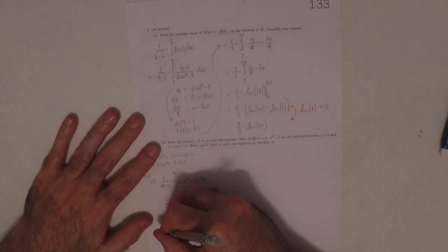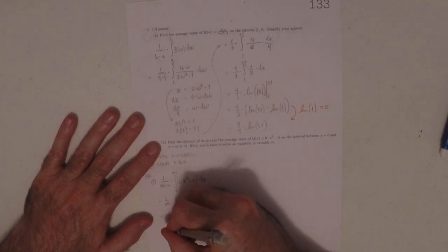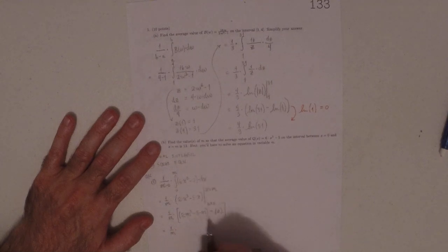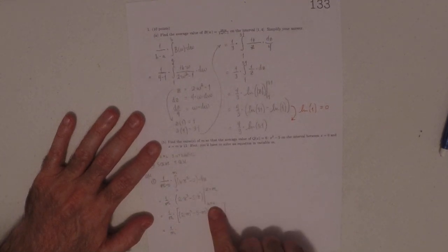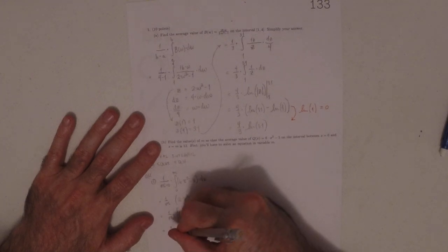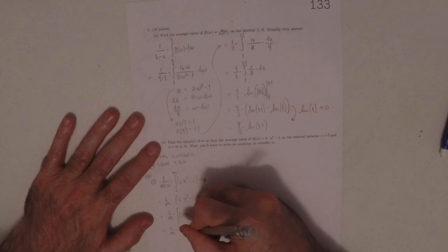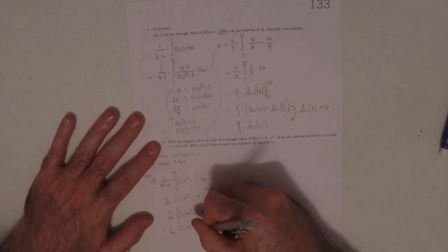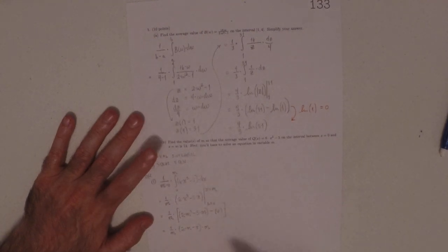Because when you plug in x equals 0, all that stuff is 0. So this would be 1 over m multiplied by... now notice that there's... in the first place, that 0 is out of the picture, and then all those terms have a common factor of m. So this looks like 1 over m and then multiplied by 2m squared subtract 5 and then multiplied by m, factoring out that common m.